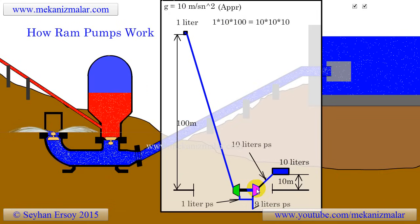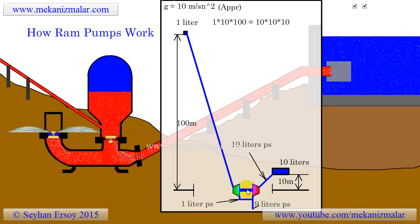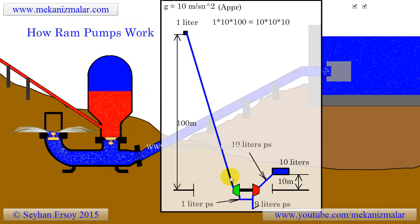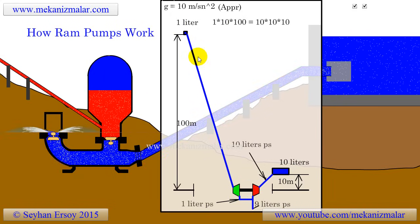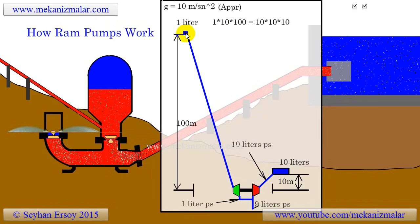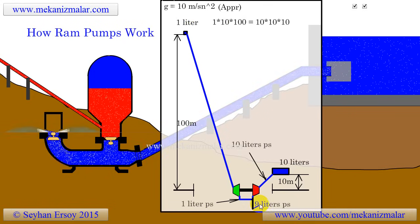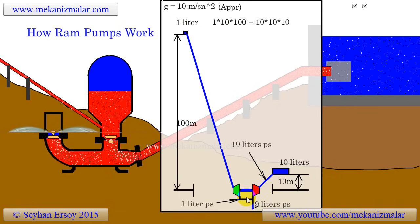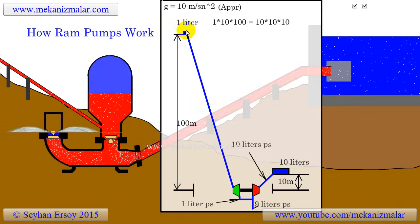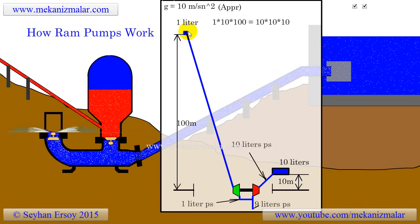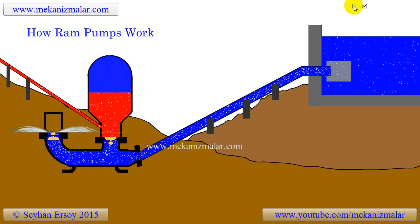We first convert the power of water to mechanical power, feed this mechanical power to the pump, and then the pump converts this mechanical power to potential energy by pumping the water to higher elevation. In this process, 9.2 liters of water are disposed to the environment per second, and 0.8 liters of water are pumped to higher elevation. Ram pumps are able to do the same thing simply by using an elegant design.